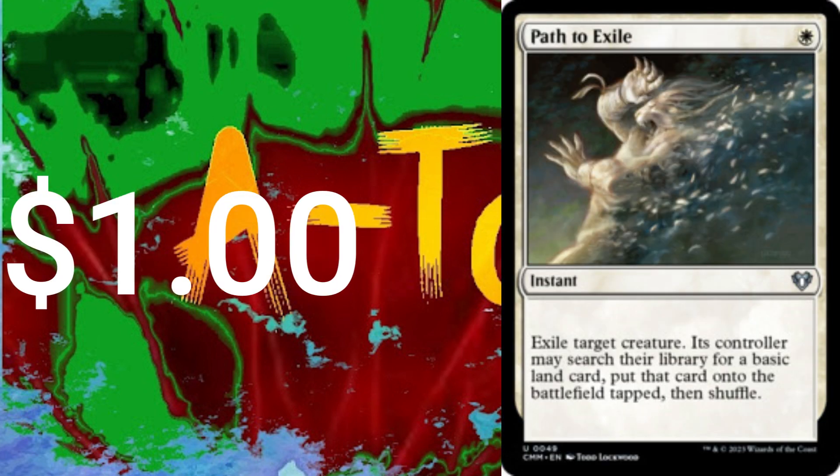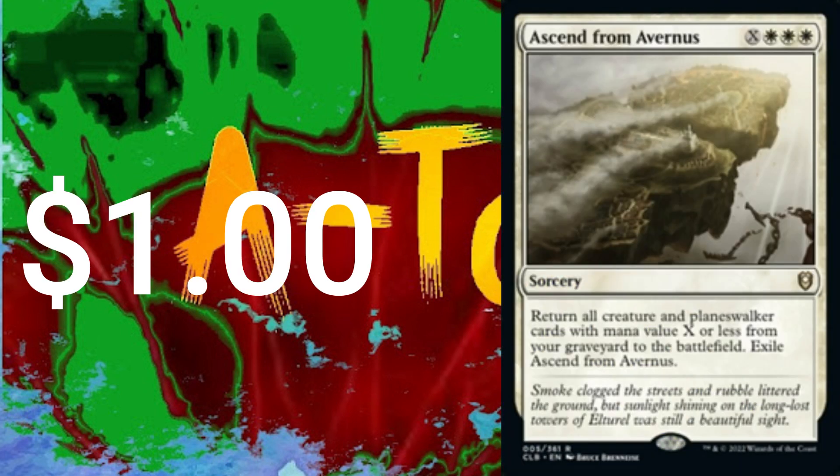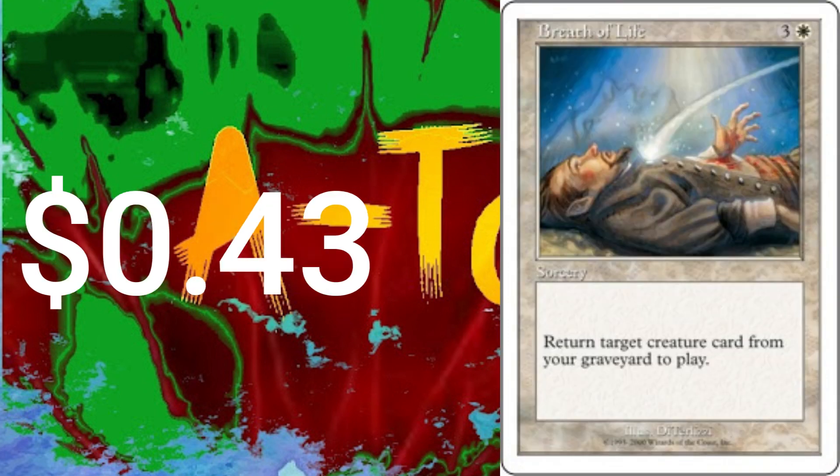Twenty spells. Enlightened Tutor, Mana Tithe, Path to Exile, Steelshaper's Gift, Swords to Plowshares, Gift of Estates, Ascend from Avernus, Generous Gift, Armageddon, Breath of Life.